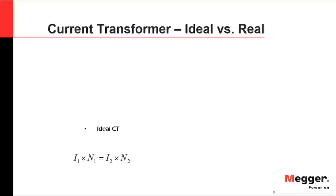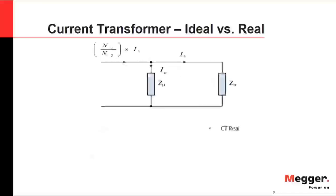In the ideal condition of a CT, the relation between the current flowing in the primary and the number of turns is equal to the current flowing in the secondary winding. However, a real current transformer is not ideal. The magnetizing circuit and magnetizing impedance will generate an excitation current that must be taken into account.